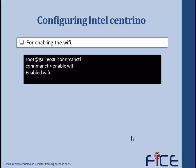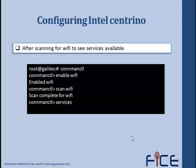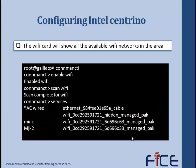When we enter the command control, we enable our Wi-Fi using the command 'enable Wi-Fi' — a message will confirm that Wi-Fi is enabled. Once enabled, we scan for various Wi-Fi networks using the command 'scan Wi-Fi.' A confirmation will say 'scan complete for Wi-Fi,' indicating our Intel Centrino has scanned available networks. To see what services are available, we use the command 'services,' which lists the different Wi-Fi networks available in that area.